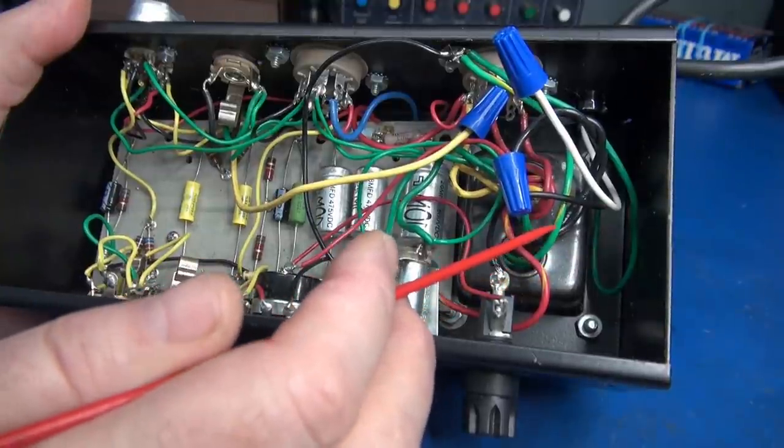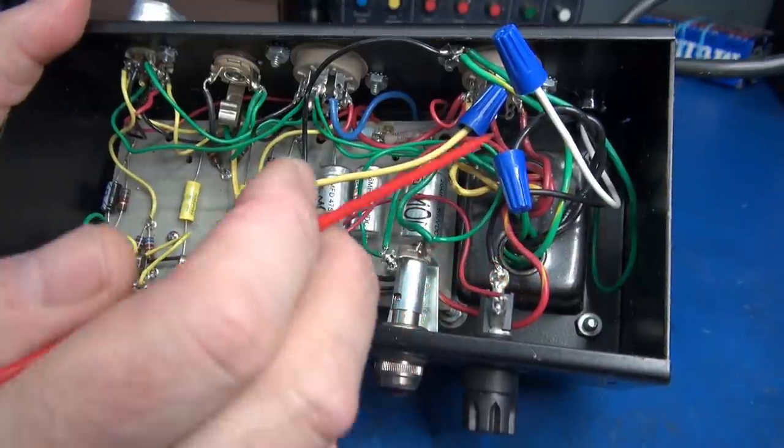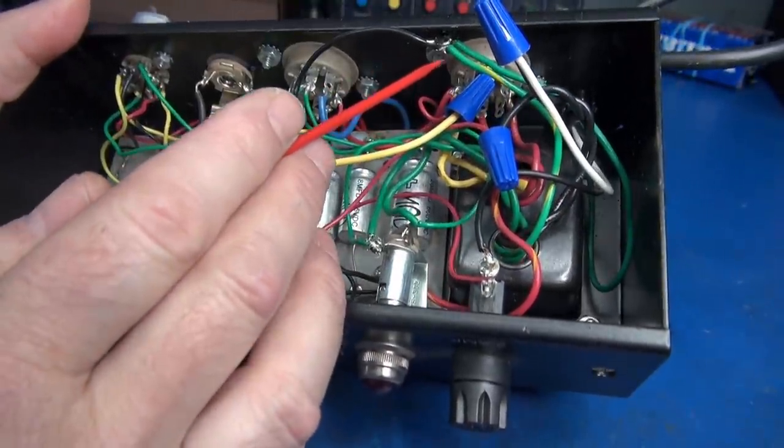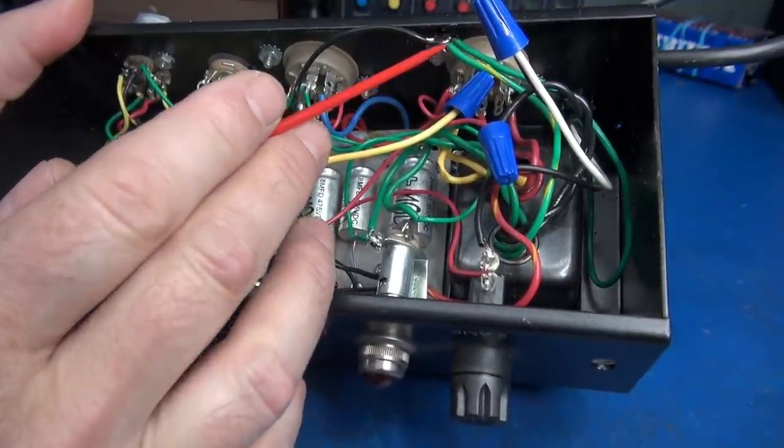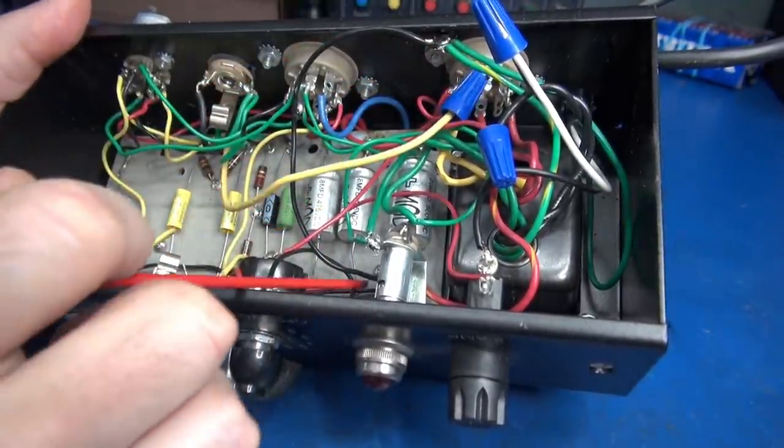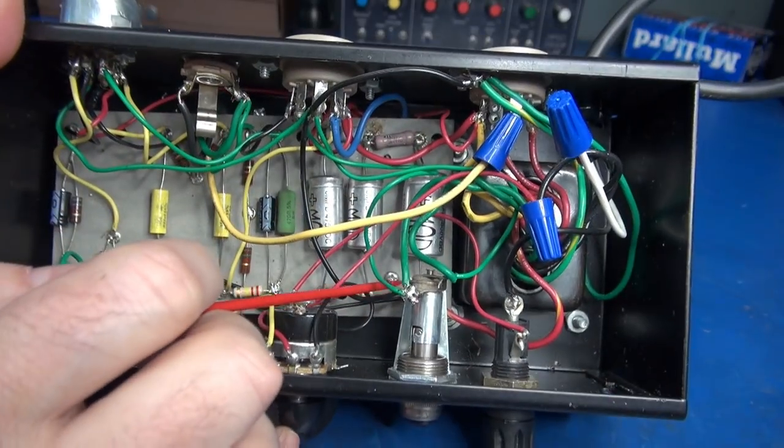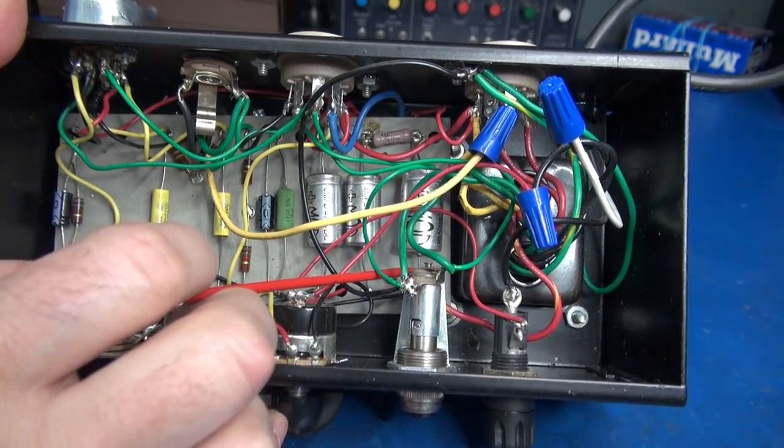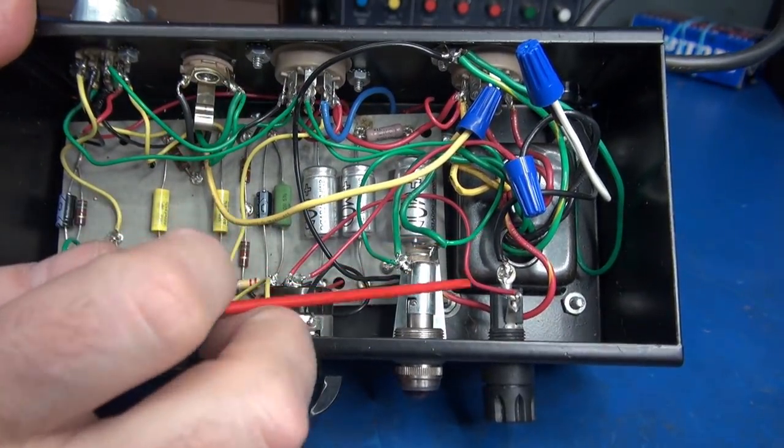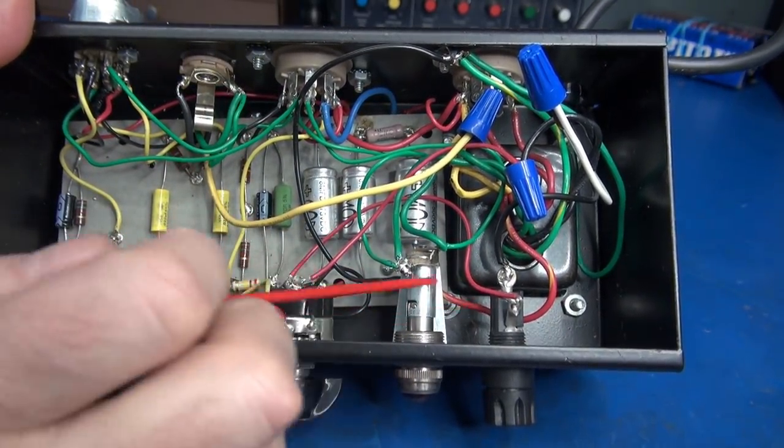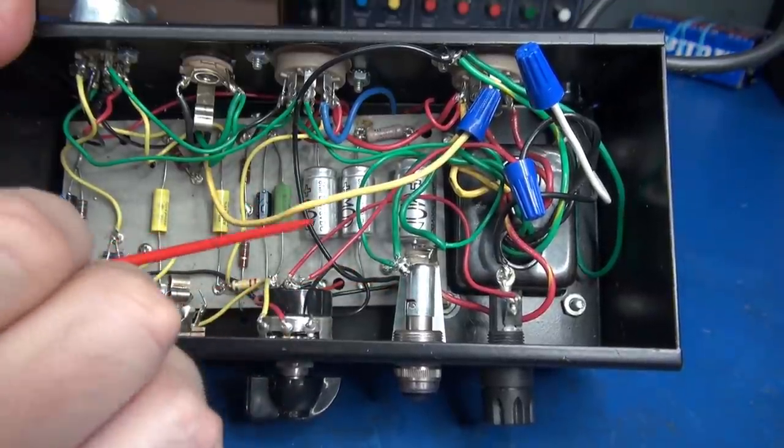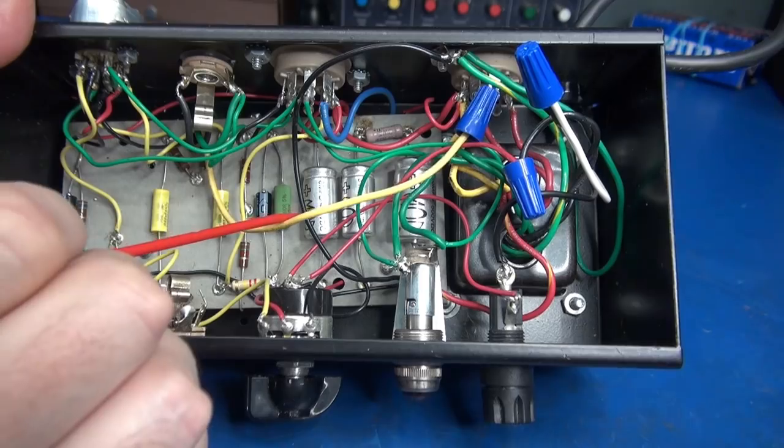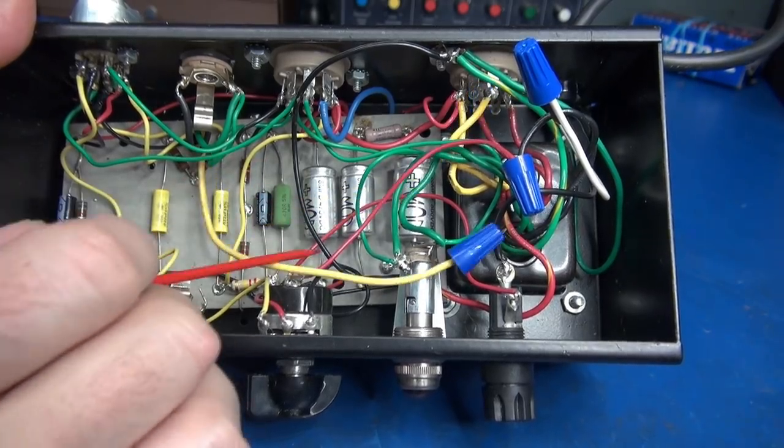Instead, it appears as though the center tap of the filaments goes up here to the 5Y3 tube socket base. They grab the ground there, and then there's a wire zinging over here to what appears to be the first filter cap ground. And the center tap of the transformer for the high voltage also meets up at that point. So I suspect we have some grounding issues, which is very common on these builds.